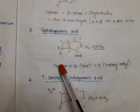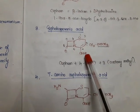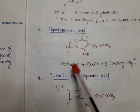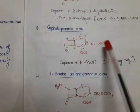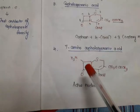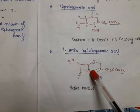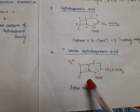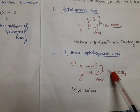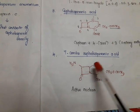Now we'll see cephalosporanic acid. Other than cephem, it is having an acetoxymethyl group at the third position and a carboxylic acid at the fourth position. So the chemical name is 3-acetoxymethylcephem-4-carboxylic acid. Now for 7-aminocephalosporanic acid, the seventh position has an amino group — that's why it is called 7-aminocephalosporanic acid. This is the active nucleus of cephalosporin. Already we have seen the active nucleus for penicillin is 6-aminopenicillanic acid, but for cephalosporin it is 7-aminocephalosporanic acid.